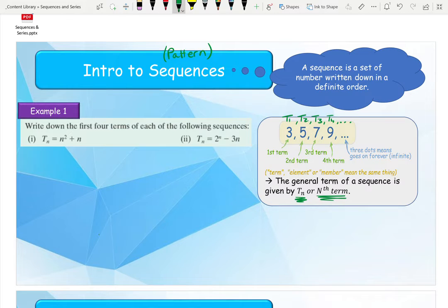But just to get used to patterns first, it says write down the first 4 terms in each of the following sequences and it gives us our general term TN. Well to write down the first 4 terms, all we need to do is T1, T2, T3 and T4.